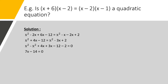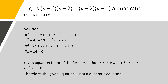Let us transpose the terms from the RHS to the LHS. x squared minus x squared cancels out; 4x plus 3x gives 7x; minus 12 minus 2 gives minus 14. So the final answer is 7x minus 14 equal to 0. We observe that the given equation is not of the form ax squared plus bx plus c equal to 0. Therefore, the given equation is not a quadratic equation.